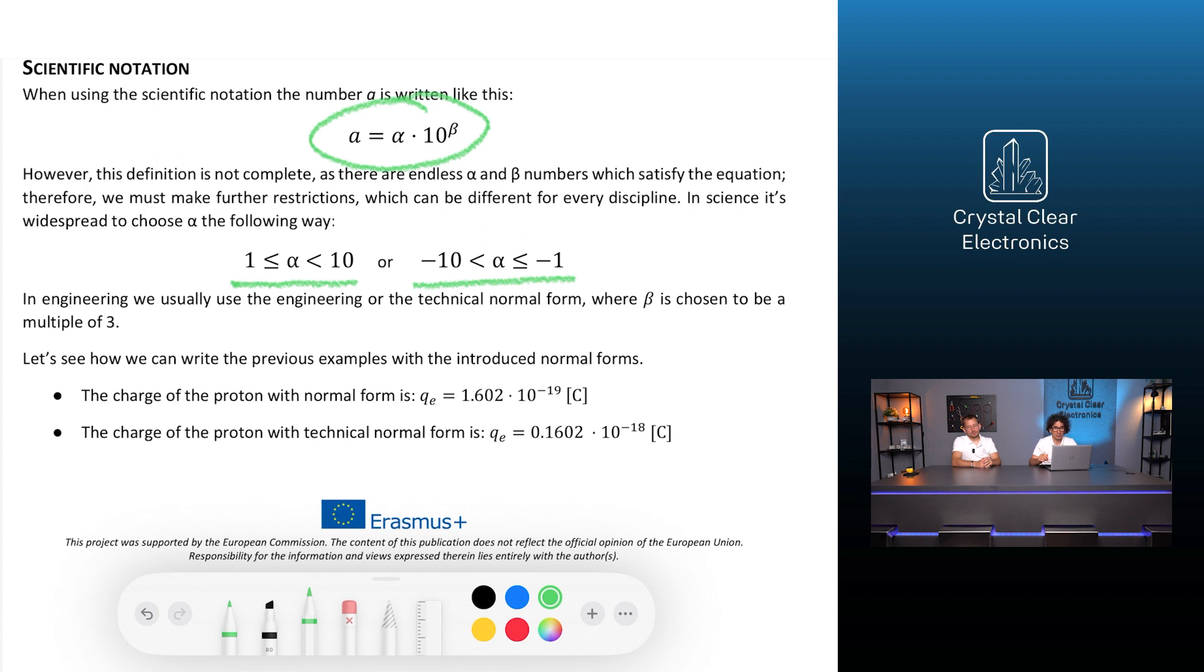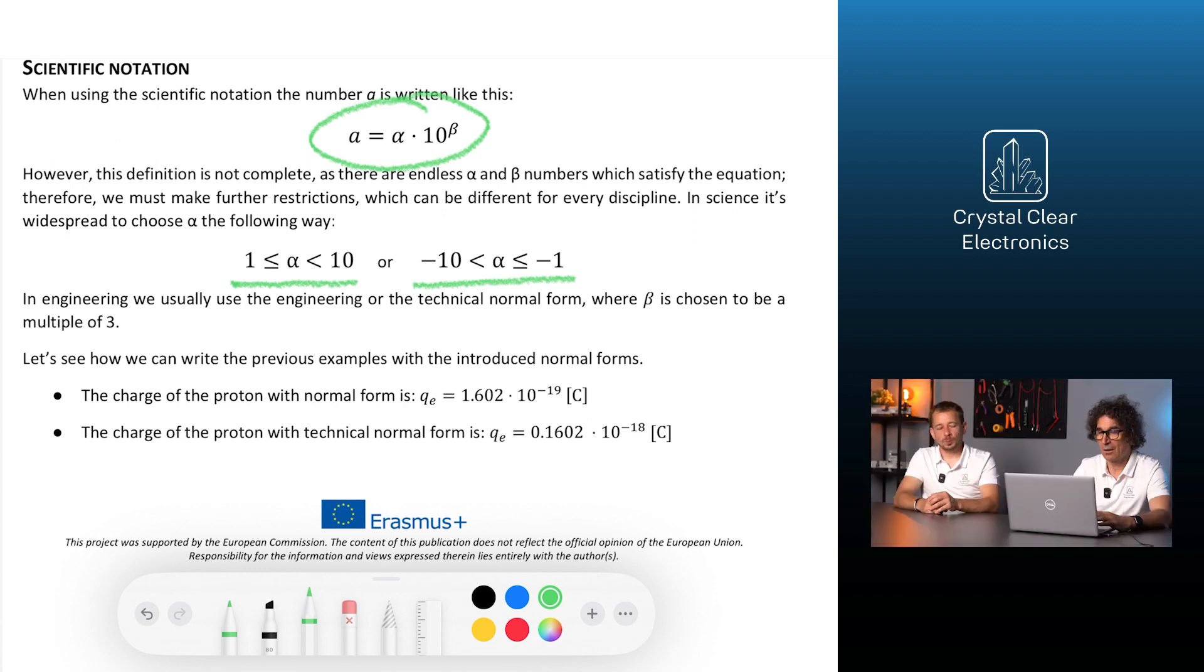In engineering, we usually use the engineering or the technical normal form, where beta is chosen to be a multiple of 3.